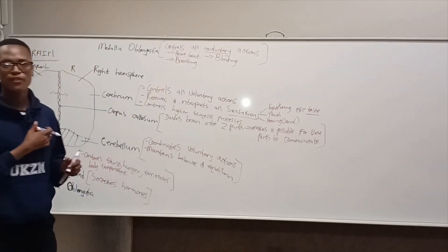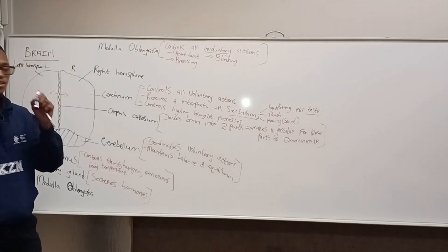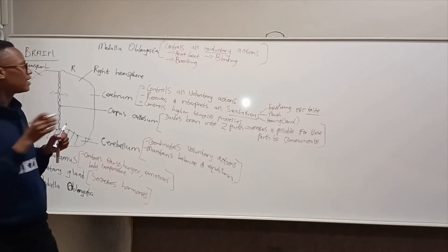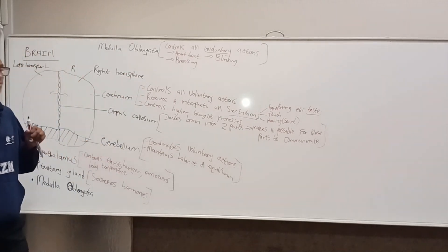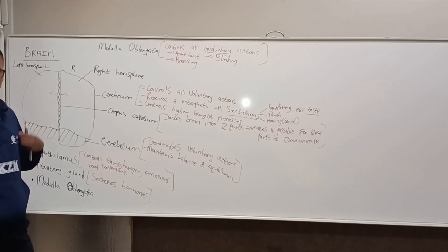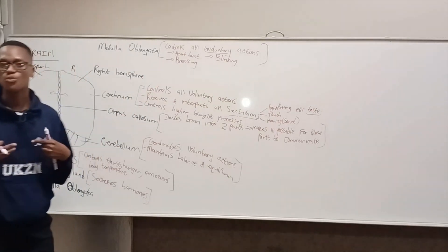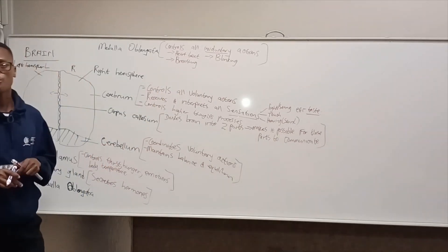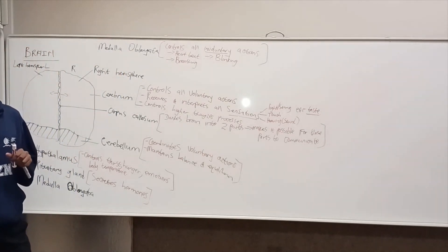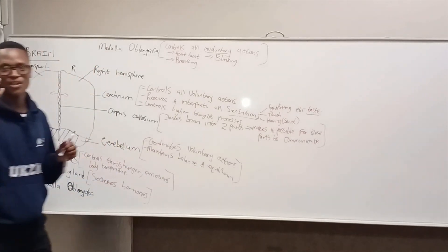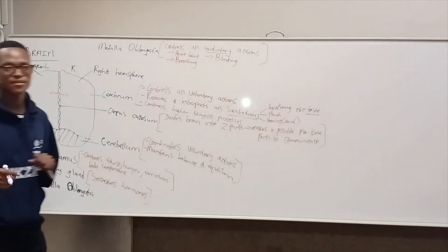The medulla oblongata sends electrical impulses to the heart so that it can beat. For breathing, the medulla oblongata sends electrical impulses to the lungs, the intercostal muscles, and the diaphragm. You can temporarily stop breathing, for example when swimming, but eventually you must breathe because the medulla oblongata stimulates you. Similarly, you can stop blinking for a few seconds, but then you must blink because it is an involuntary action.